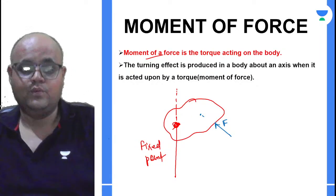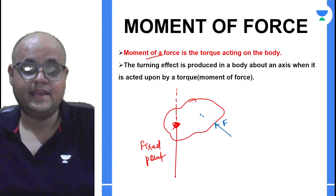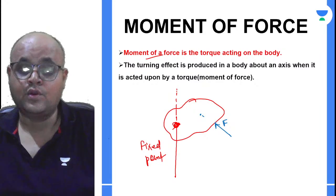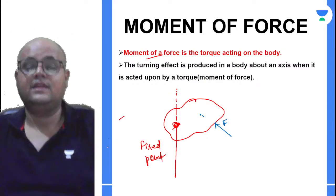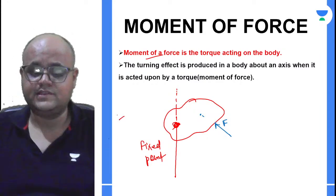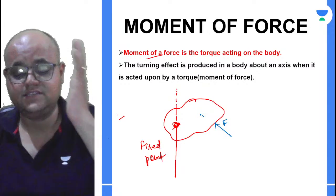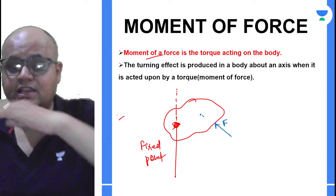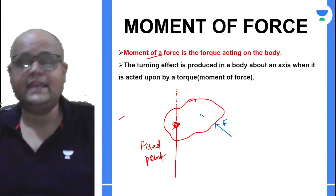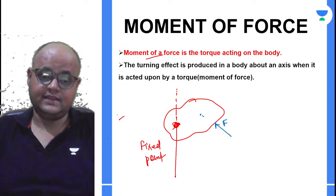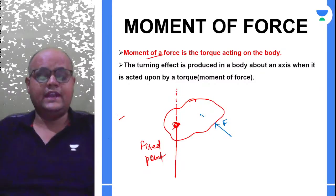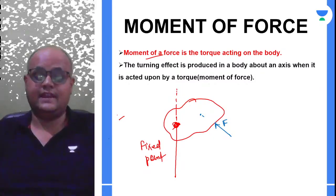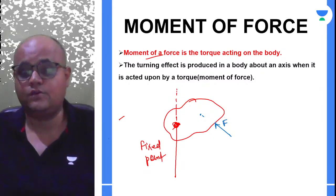When the body is fixed at one end and you are applying a force, this force cannot create a linear effect — because once the body's end is fixed, the body will start rotating about its end. It will create a turning effect. About this fixed point, this will be the direction of rotation of the body.